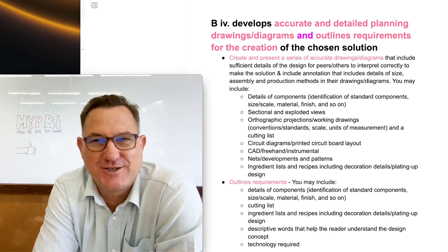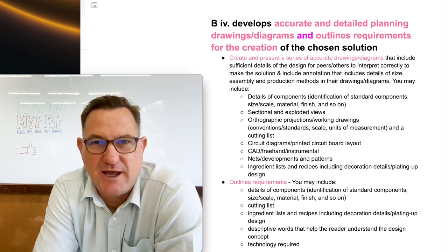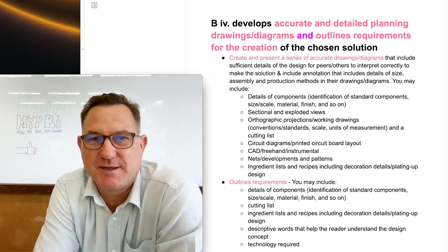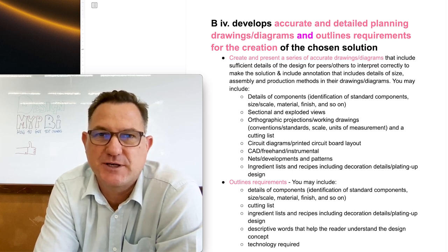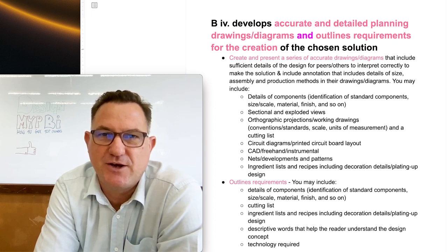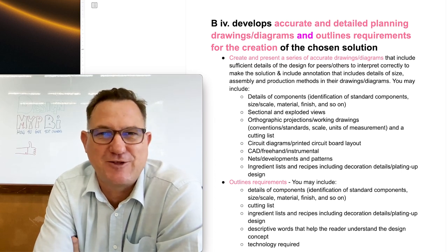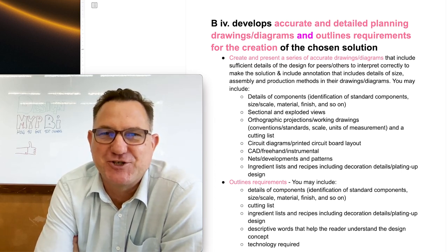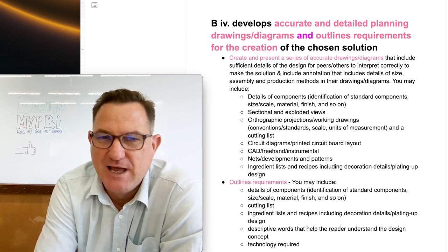Hello there, thanks for watching. This video is for MYP design students, in particular students who are preparing their summative assessment for Criterion B and want to get a score of 8. I'm going to talk you through how to get top marks for Strand 4 in particular. In previous videos I've talked about how to get top marks in Strands 1, 2 and 3, and you're welcome to check those out. So let's get into it.